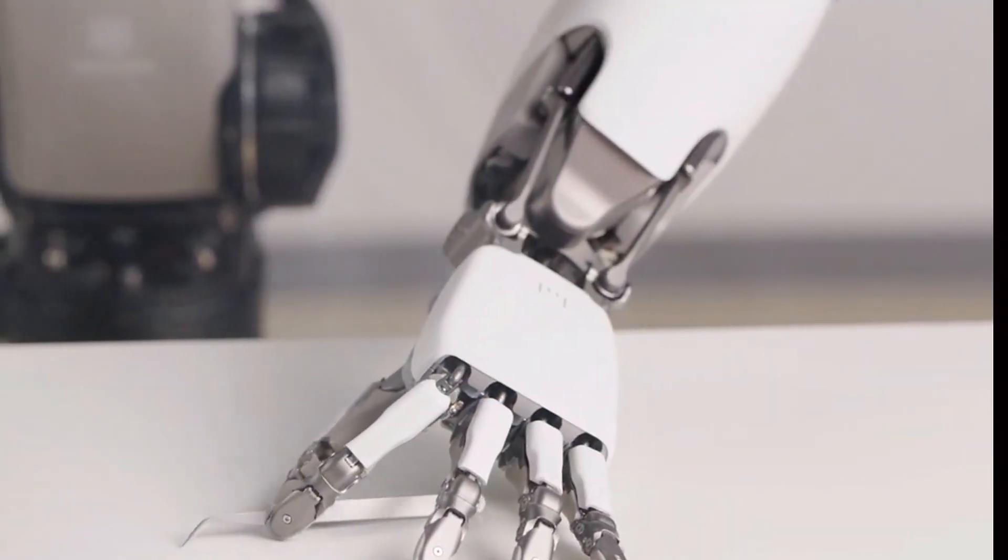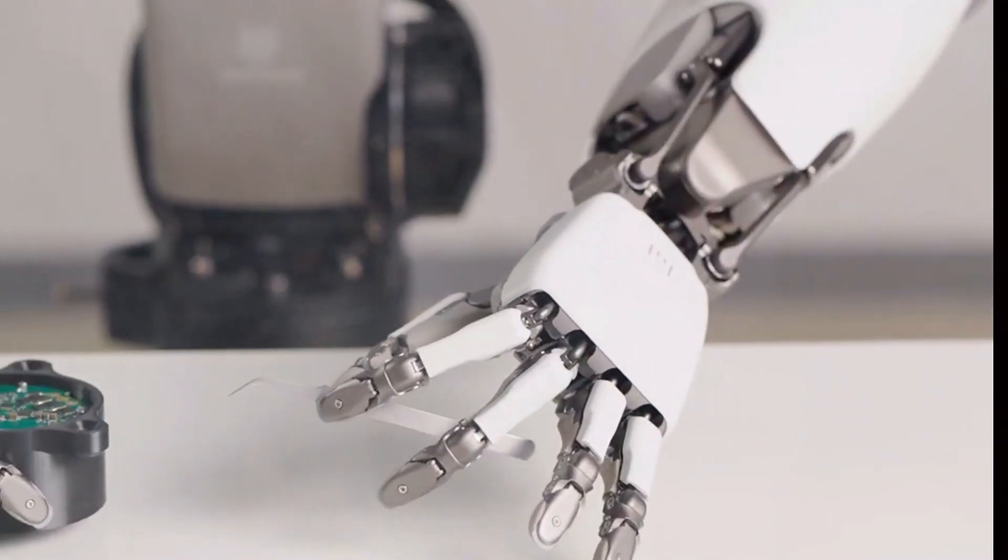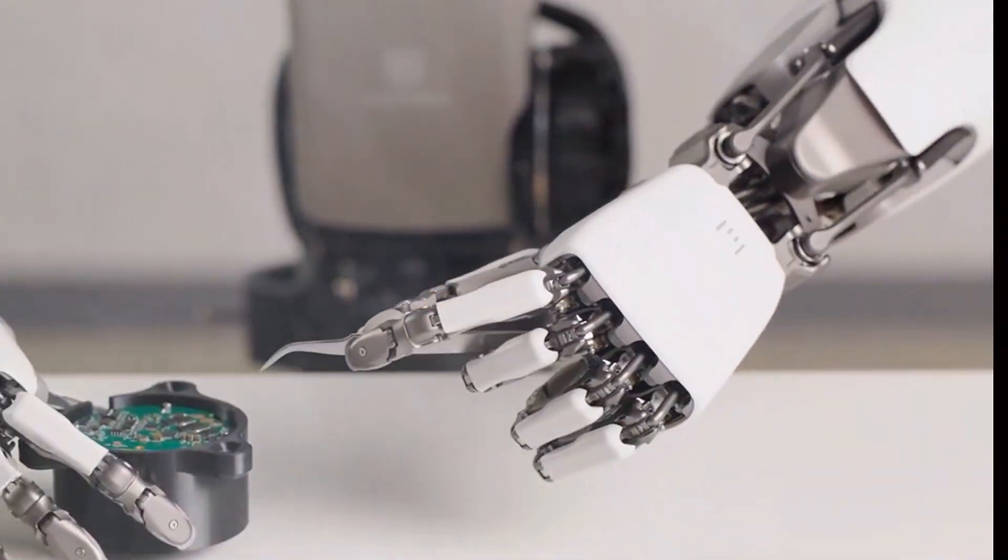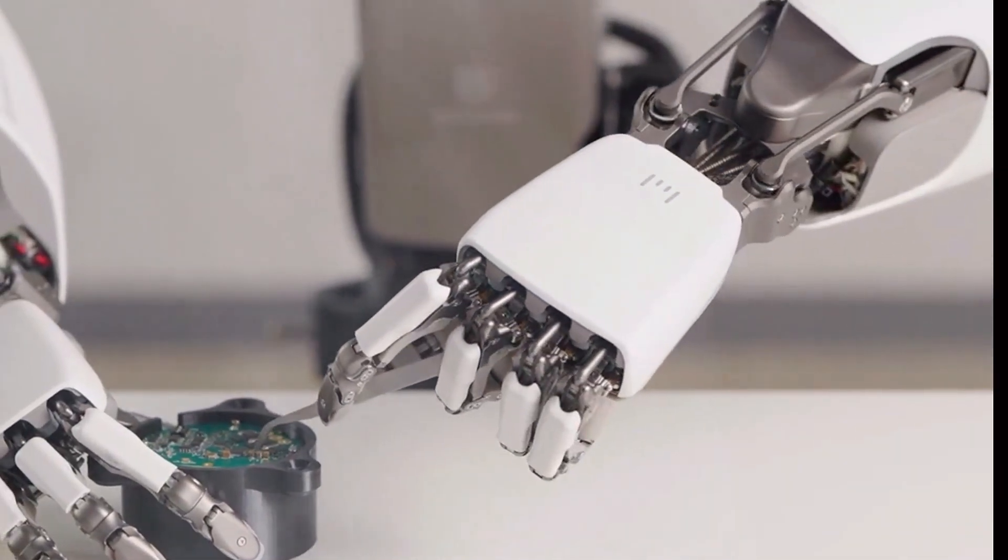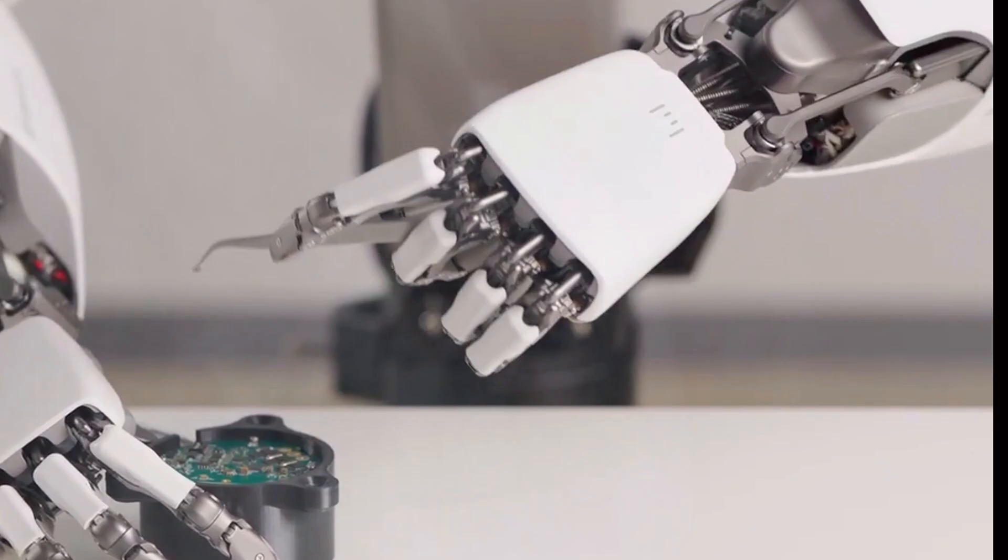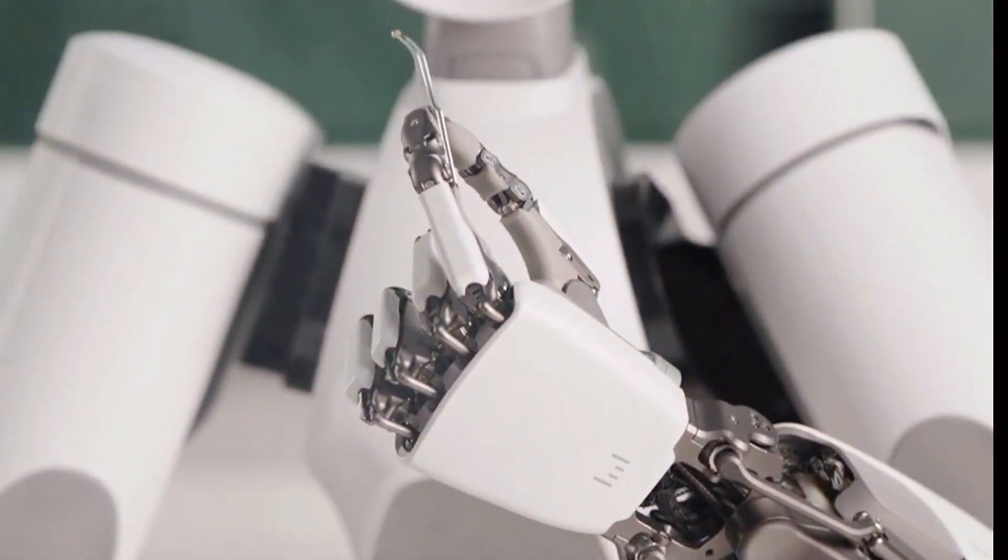And here's where things get wild. Alex isn't just moving like a human, it's learning like one too. Thanks to a framework called Beyond Mimic, robots can now directly copy complex human motions.